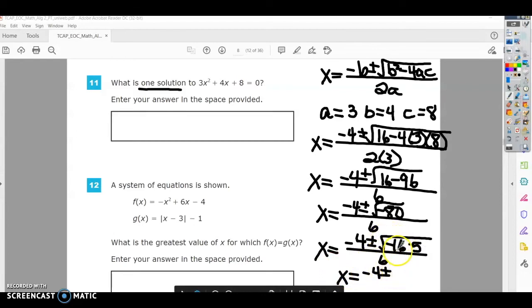because it's an imaginary number. So the square root of 16 is 4. The negative makes it i square root of 5 over 6.